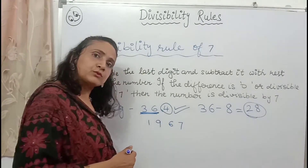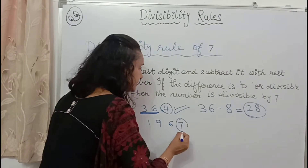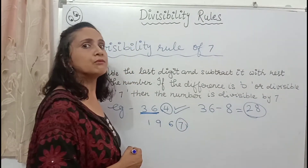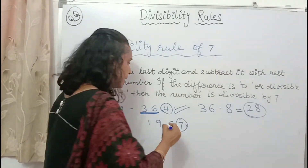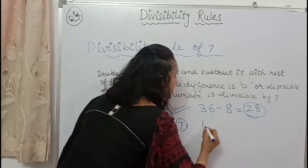Now let's try 1967. We do the same thing. The last digit is 7. First we will double it — 7 doubled is 14. Now the rest of the number is 196. So we subtract 14 from 196, which gives us 182.